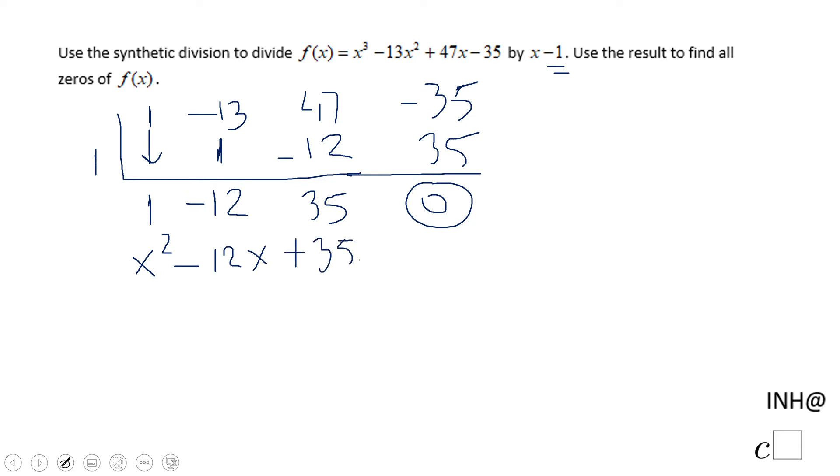Which can be factored out. We're looking for two numbers whose product is 35 and sum is negative 12. And that's negative 7 and negative 5.